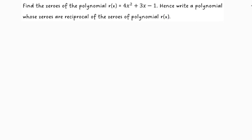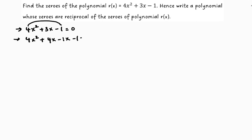So here 4x² + 3x - 1 = 0. I need to find factors of 4 into 1, which is 4. Factors are 4 and 1 because I need 3. So 4x² + 4x - 1x - 1 = 0.